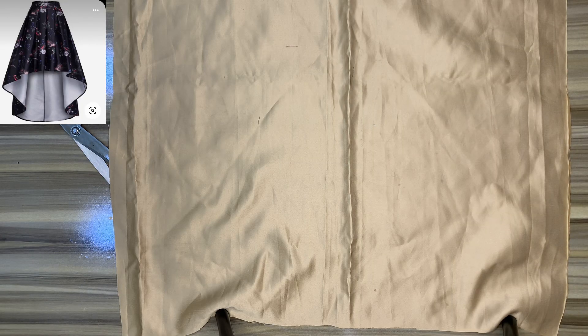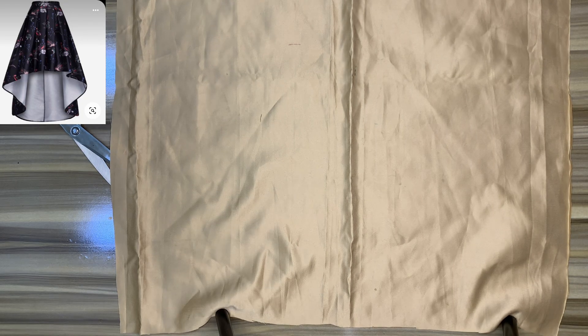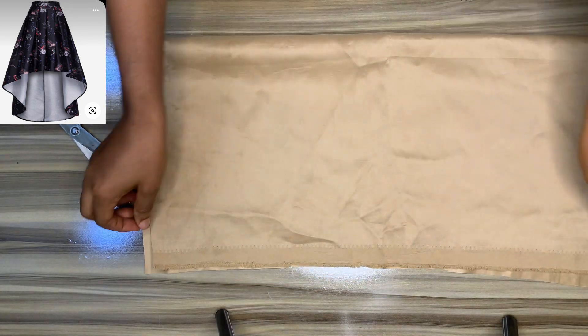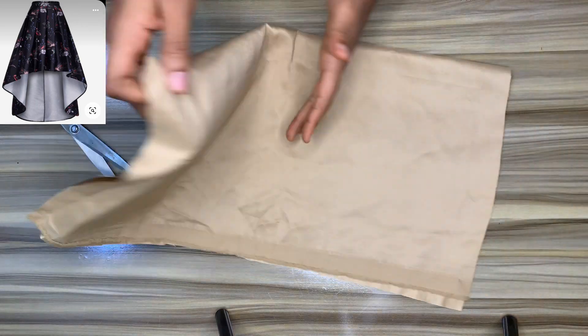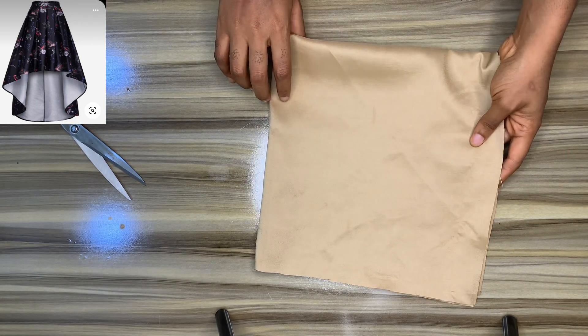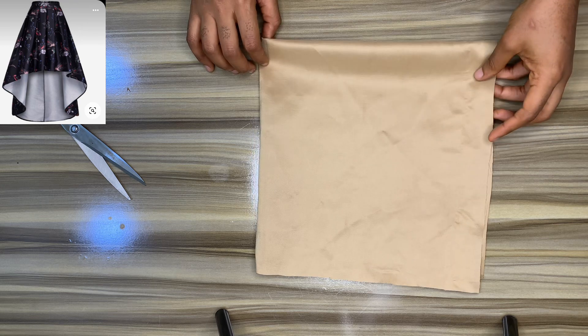Happy holiday, welcome to another tutorial video. In this video we'll be learning how to make a high-low skirt. First things first, we'll fold our material into two and fold it into four like so, in a box shape.